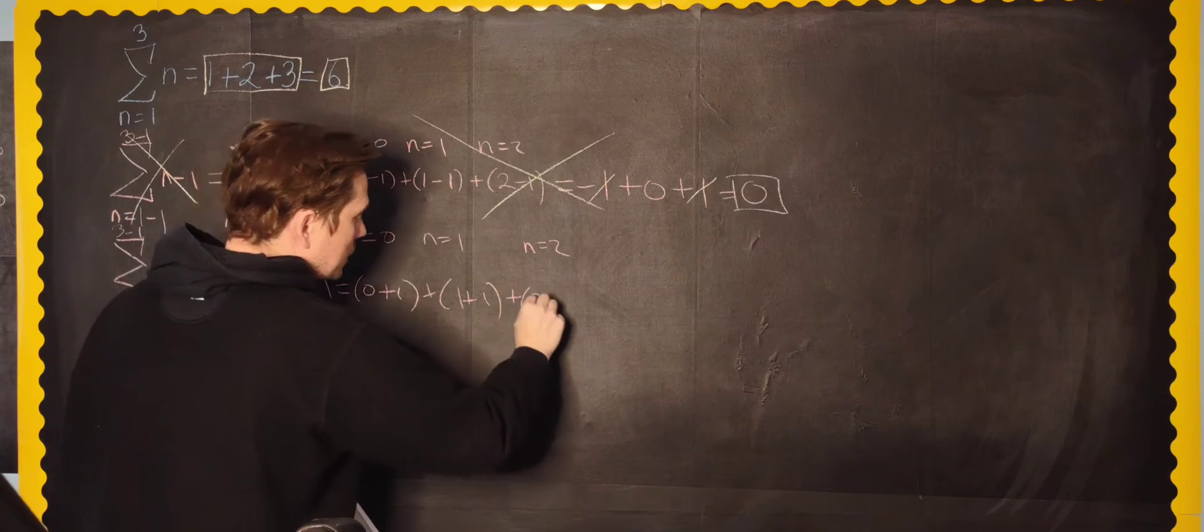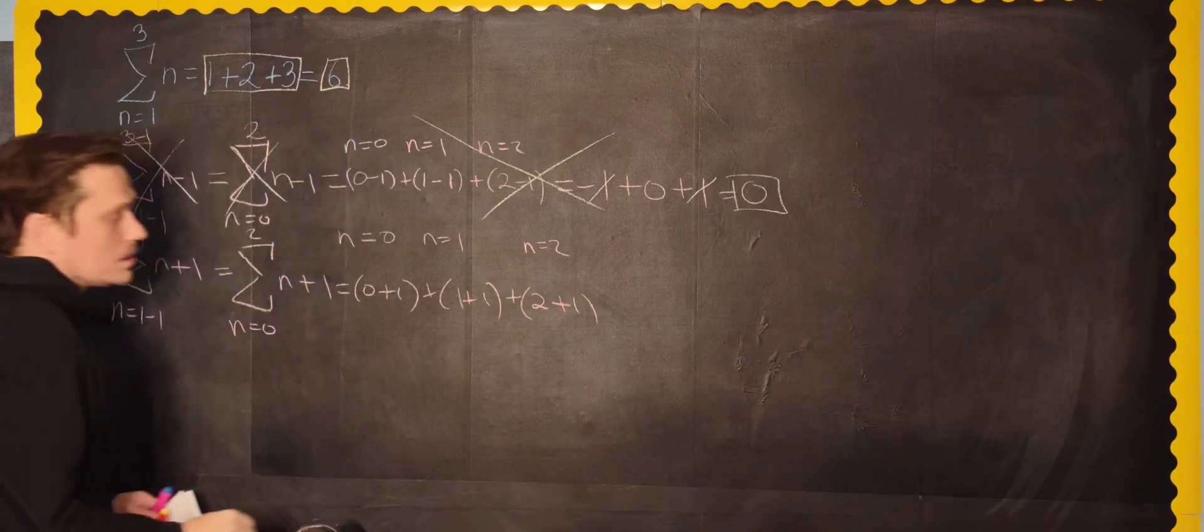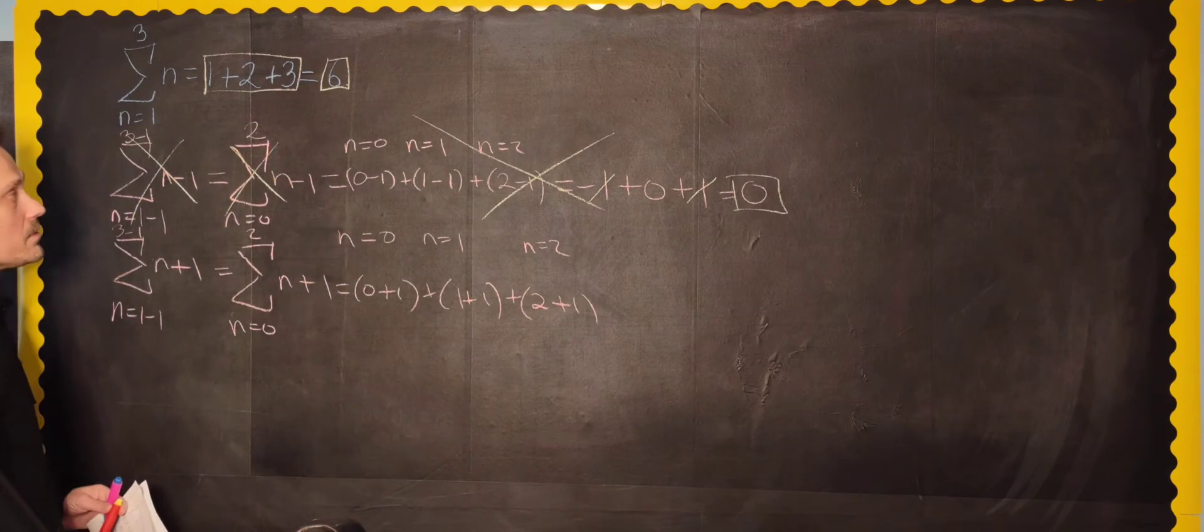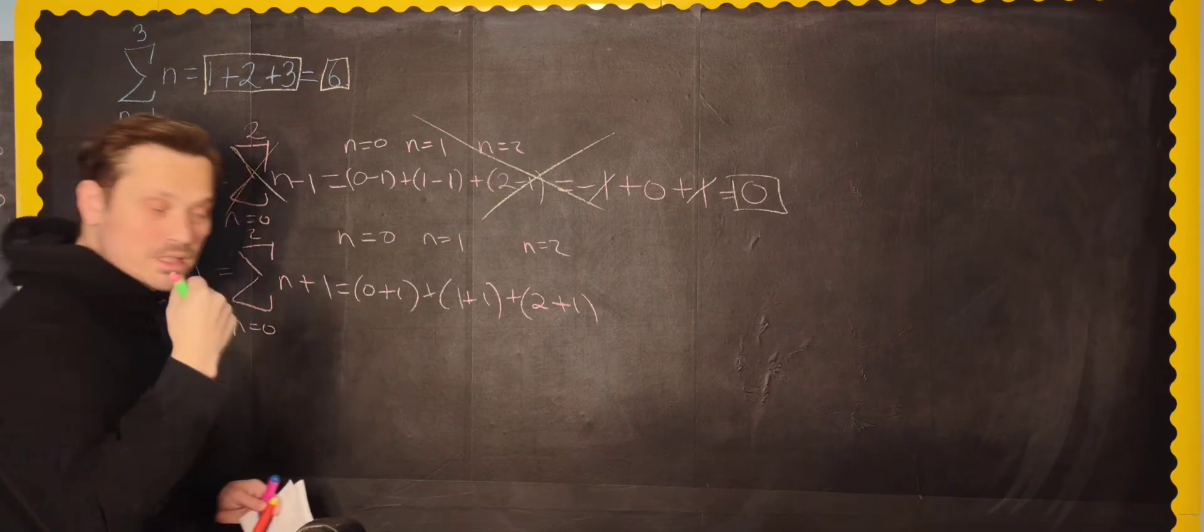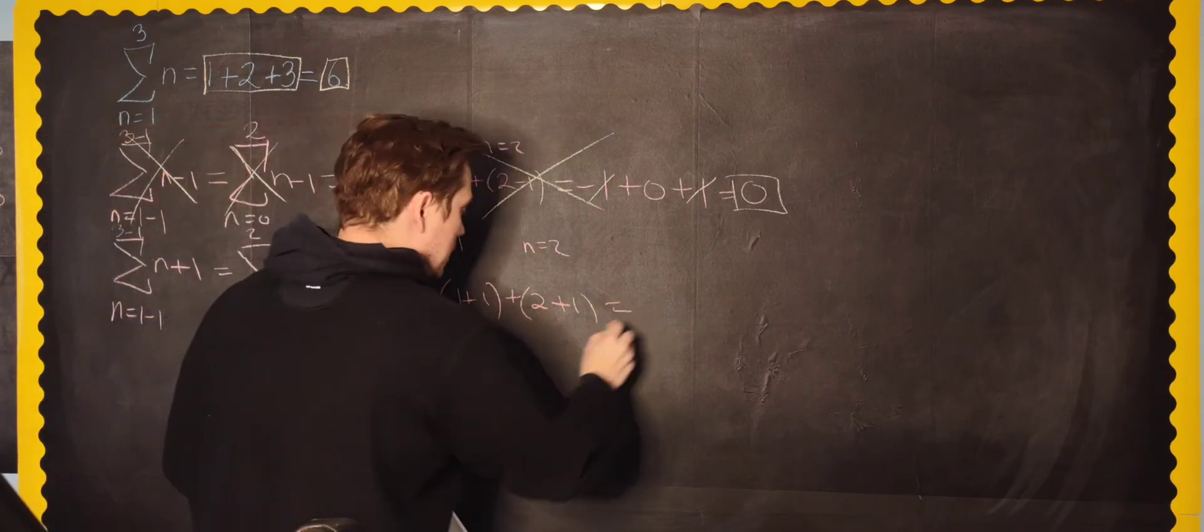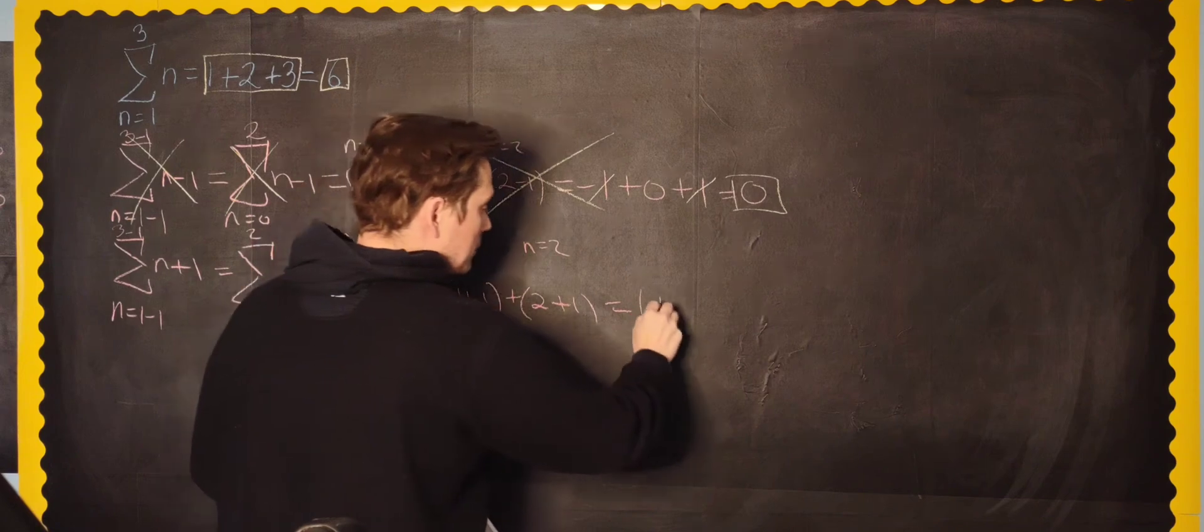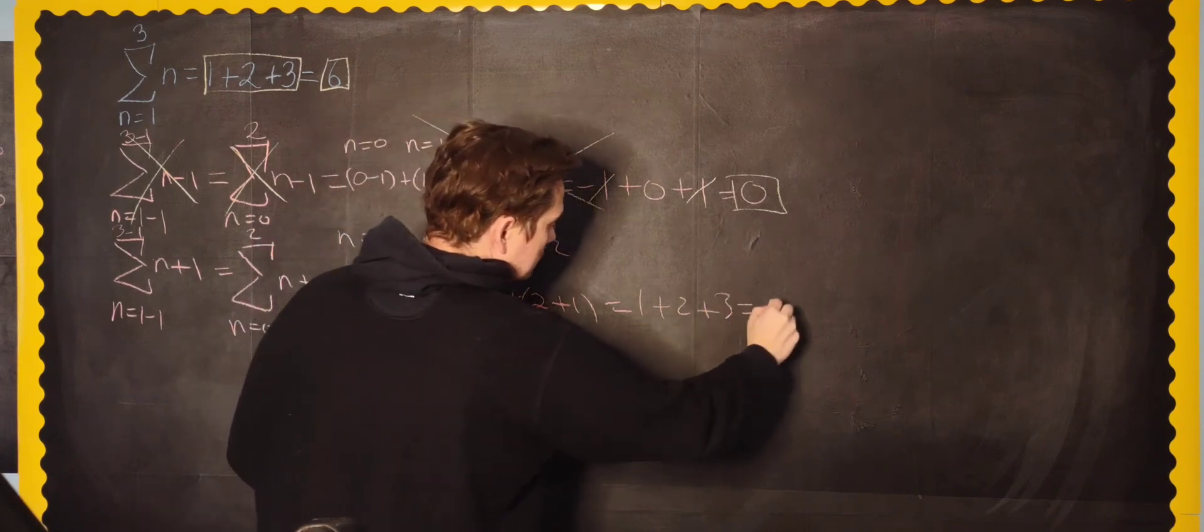Now look. Does this work? Check it. So when n has the value 0. Now, from this, you would have 0 plus 1. When n has the value 1. From this, you would have 1 plus 1. And when n has the value 2 here. So when n is 2, then from this, you would have 2 plus 1. And notice these numbers within parentheses, they will come out to be 1 plus 2 plus 3.